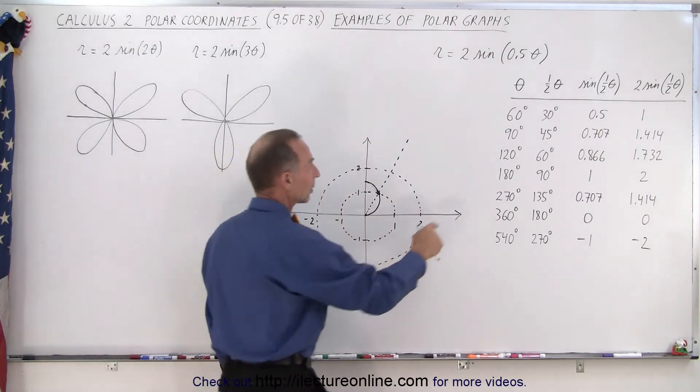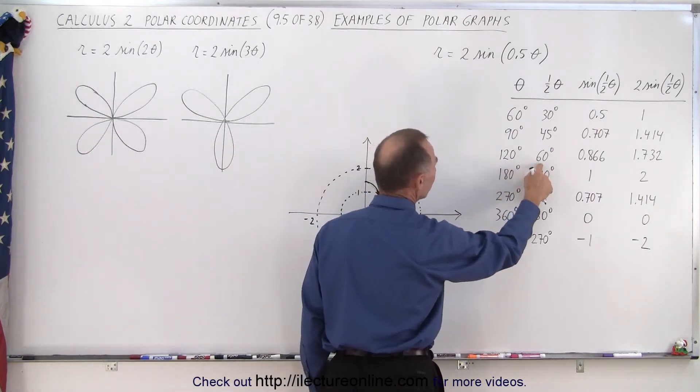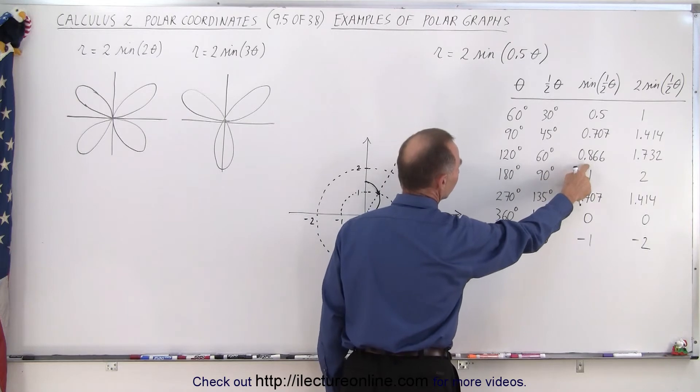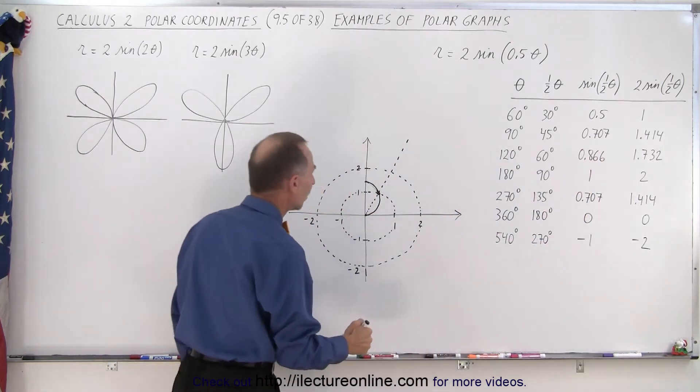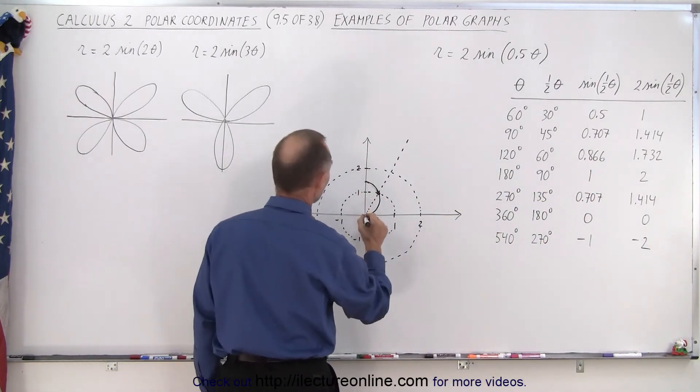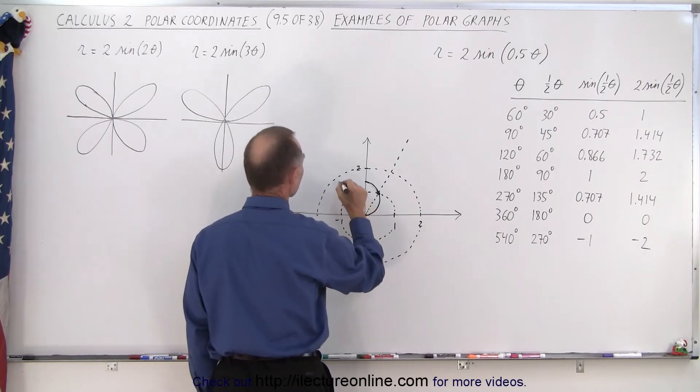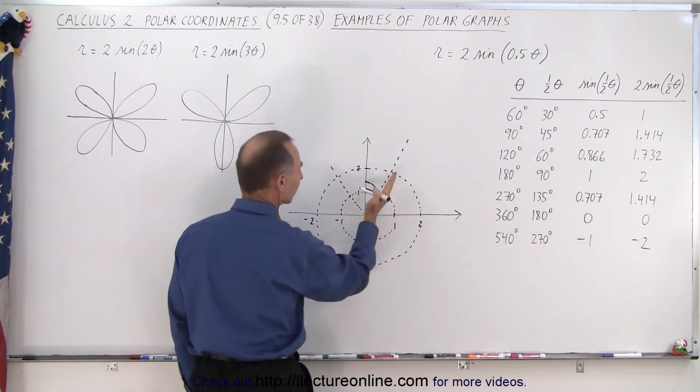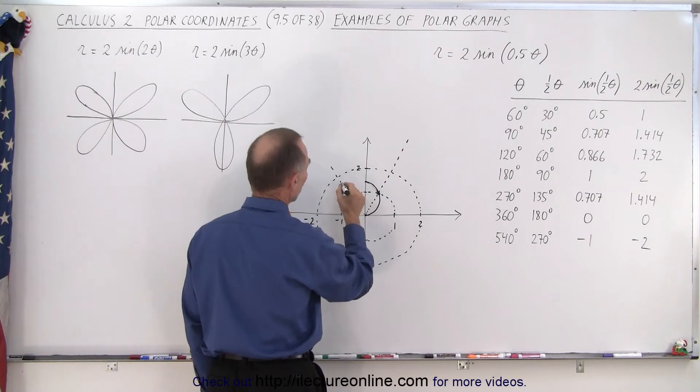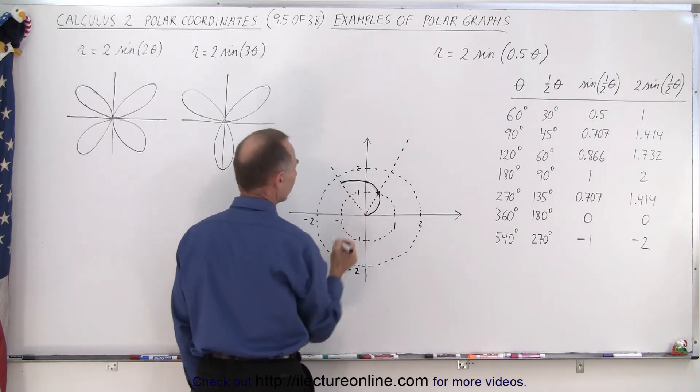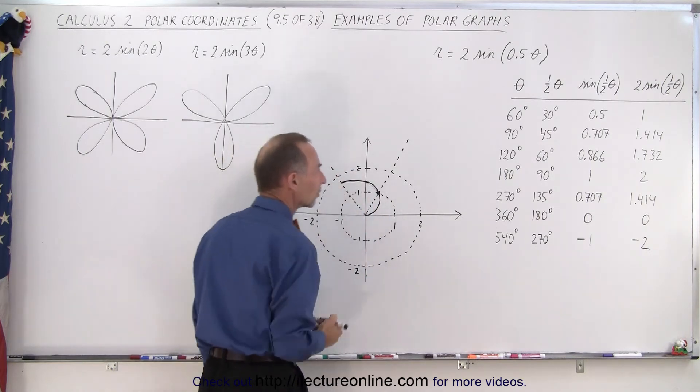Continuing, let's make the angle 120 degrees. Half of that is 60, the sine of 60 is 0.866, double that is about 1.7. So 120 degrees, that would be in this direction. That's a 120 degree angle from the x-axis. Now we're at a distance of about 1.7, so you can see that the line would continue to about there. The shape is beginning to form.